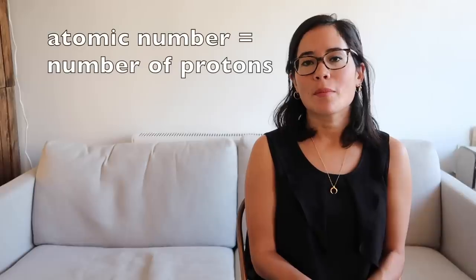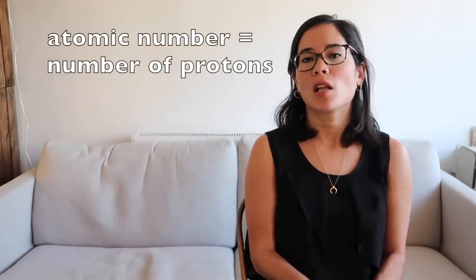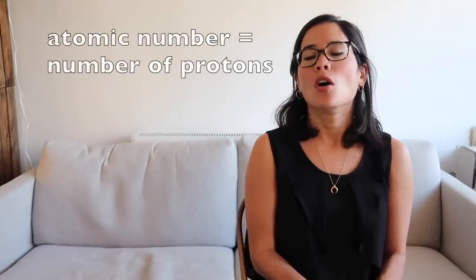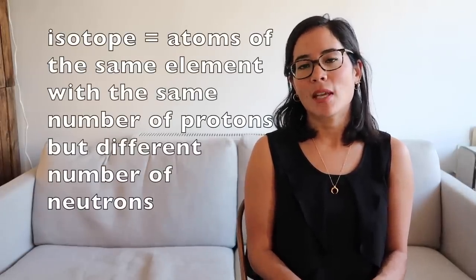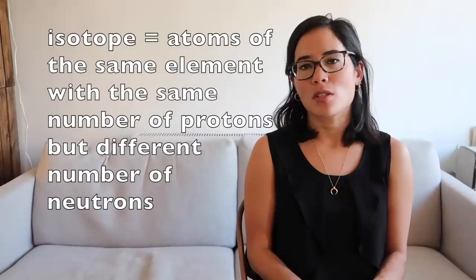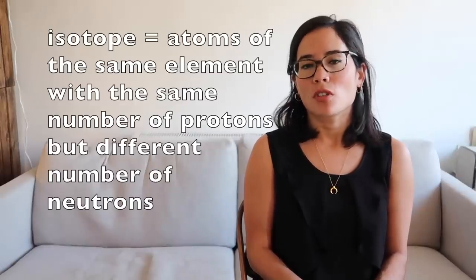From the periodic table: the atomic number is the number of protons, and the mass number is protons plus neutrons. This is important for isotopes — for example carbon-12 and carbon-14 are atoms of the same element with the same number of protons but different numbers of neutrons.